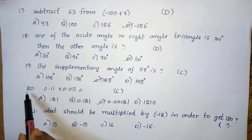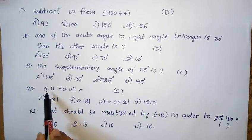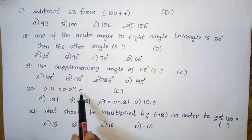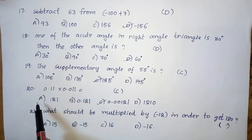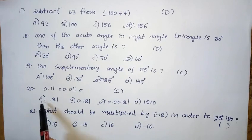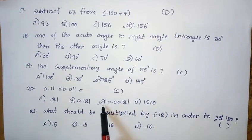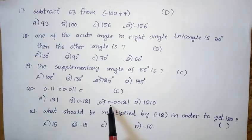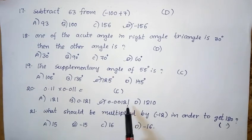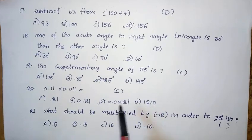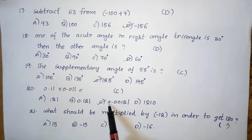Twentieth question: 0.11 into 0.011 equals — Option A: 121. Option B: 0.121. Option C: 0.00121. Option D: 1210. The right answer is option C — 0.00121.